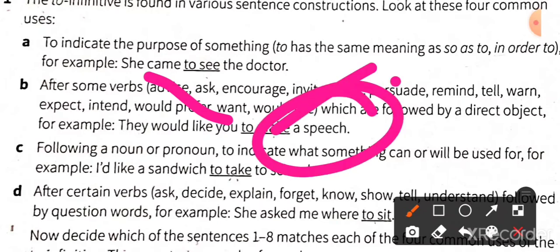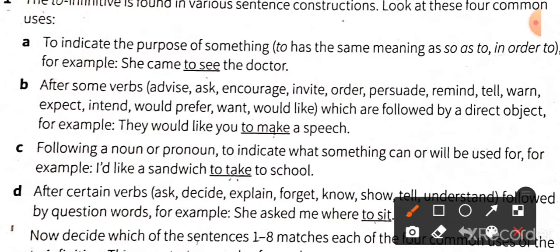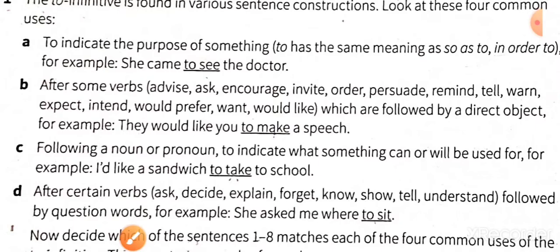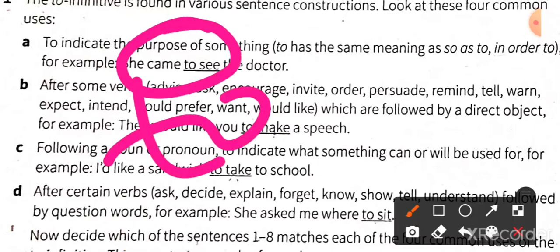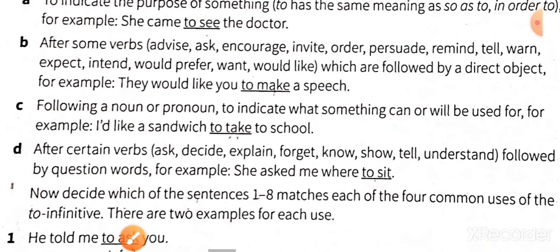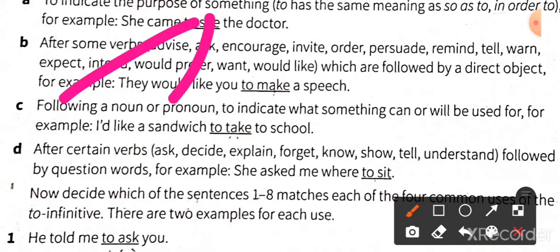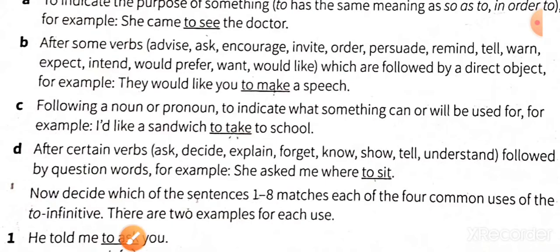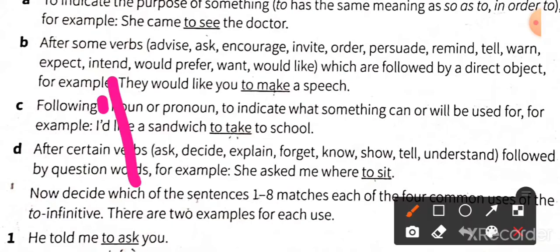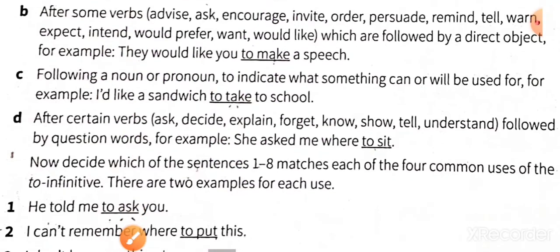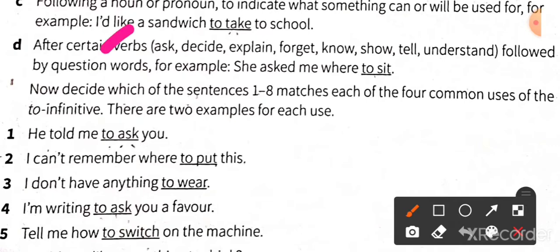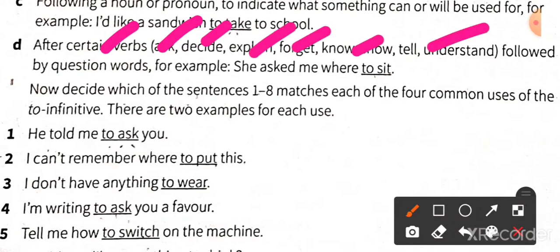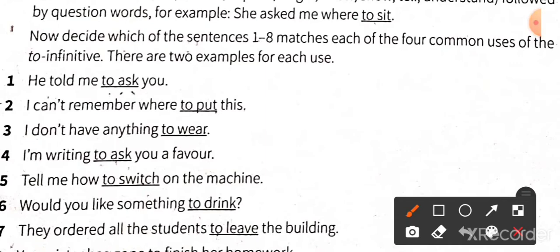The word 'to' is used when you have a purpose — for example, 'you are coming to see the doctor.' Also, after certain verbs — advise, ask, encourage, invite, order, persuade, remind, tell, warn, expect, intend, would prefer, want, would like — you have to use 'to' if it is followed by a direct object. For example: 'they would like you to make a speech' — speech is the direct object.